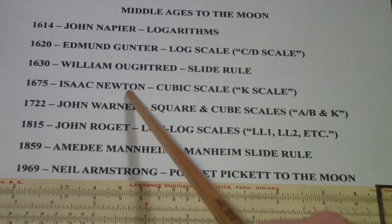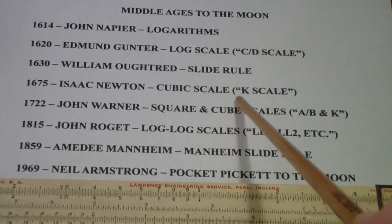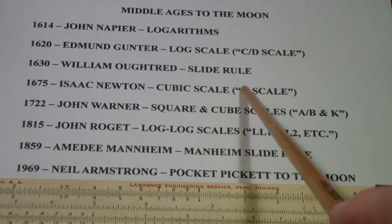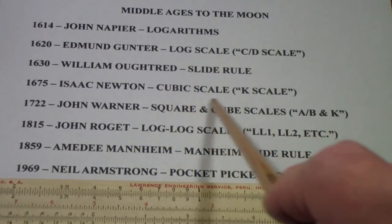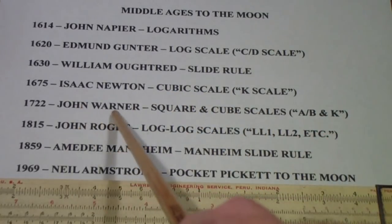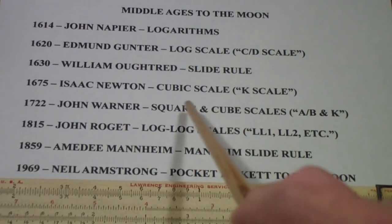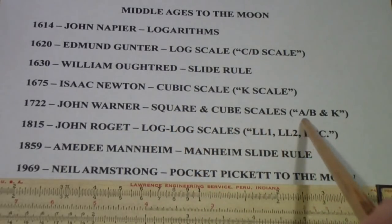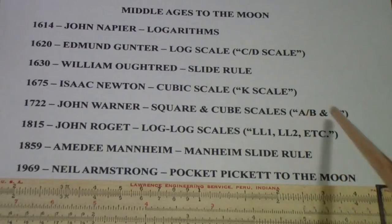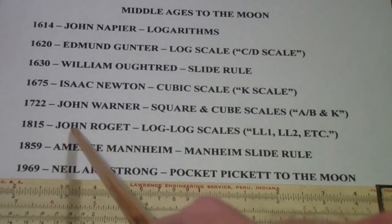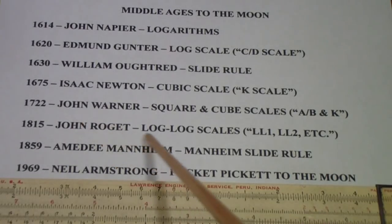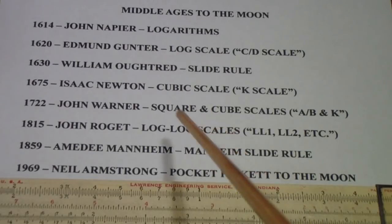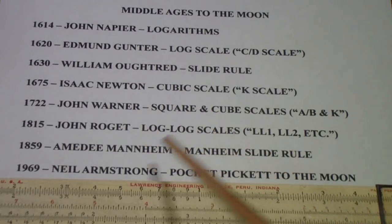In 1675, Isaac Newton used them to a rudimentary cubic scale, today we would call that the K scale, to solve cubic equations. Then John Warner developed both square and cube scales, today we would call those the A/B and the K scale. The inventor of Roget's Thesaurus also invented the log-log scales that we may or may not talk about.